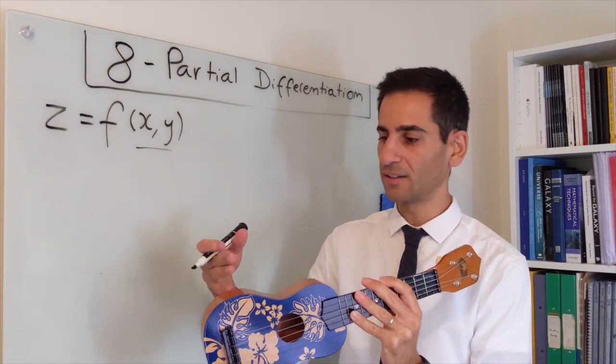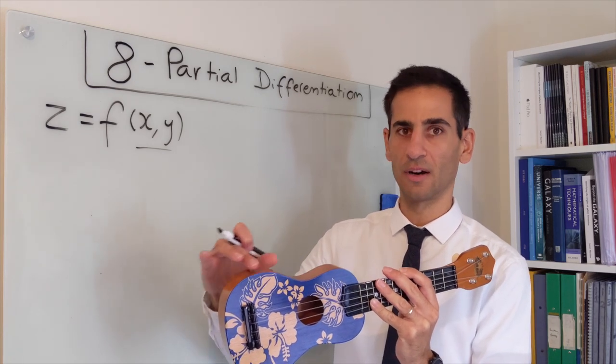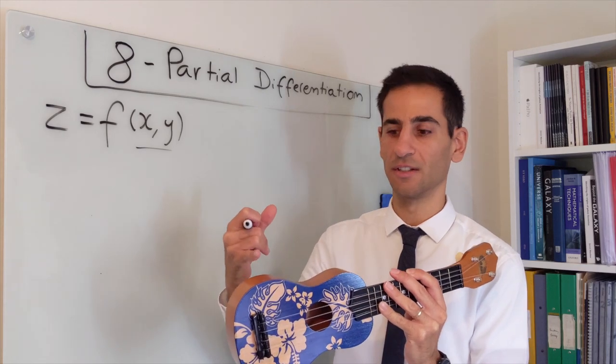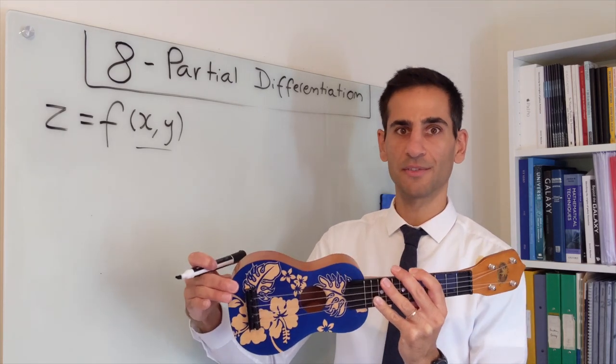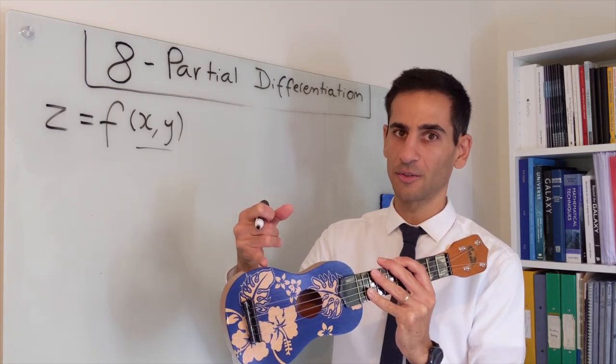But if we take another direction, say this, regardless of where we are there is actually no slope, there is no change. This would mean that within the surface, the magical ukulele, the partial derivative is going to be zero along this direction.